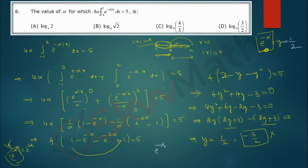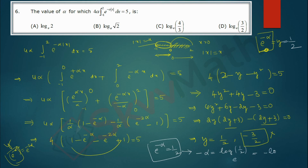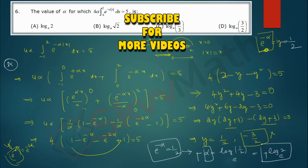Since e^(−α) = 1/2, converting to logarithmic form: −α = log(1/2) base e = log 1 − log 2 = 0 − log 2 = −log 2. Cancelling the minus signs on both sides gives α = log 2 base e, which matches option A. The key ideas are: splitting the integral at the zero of the modulus argument, and knowing the definition of the modulus function.